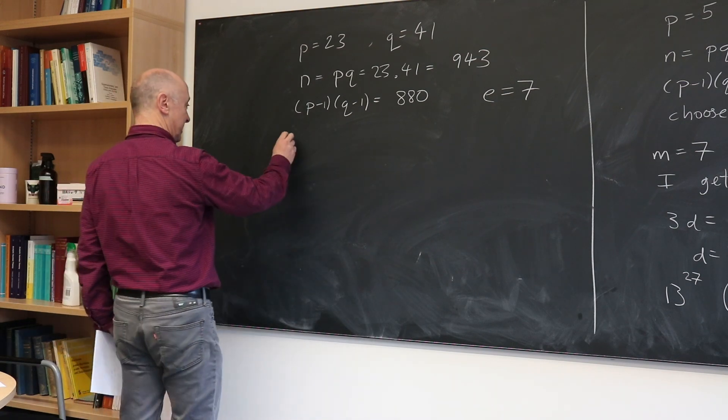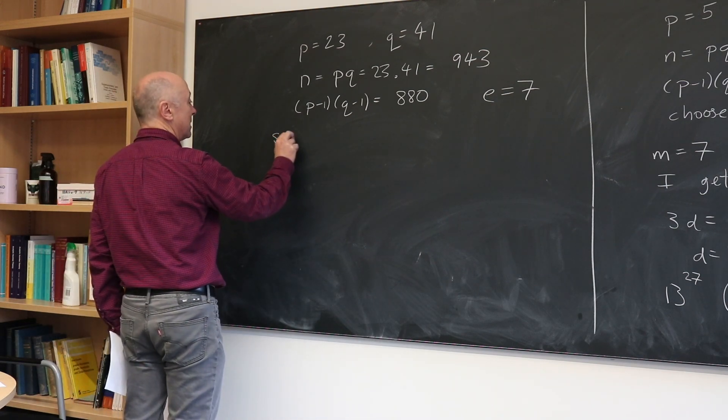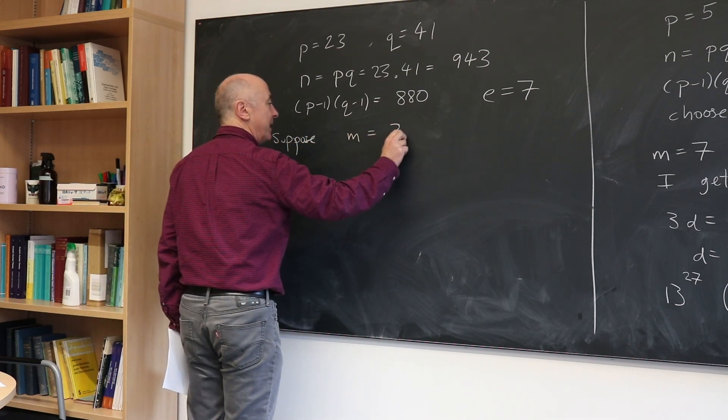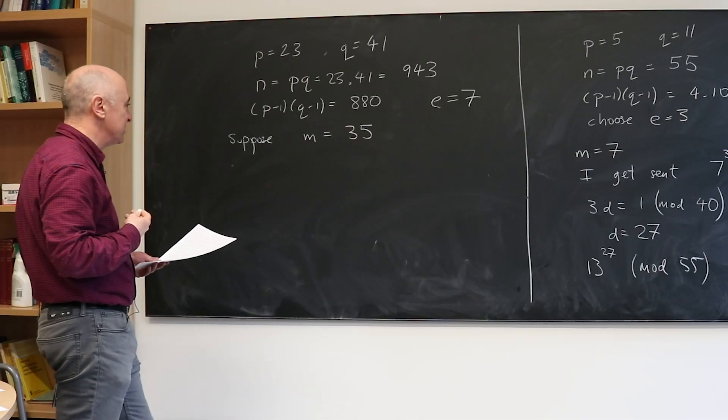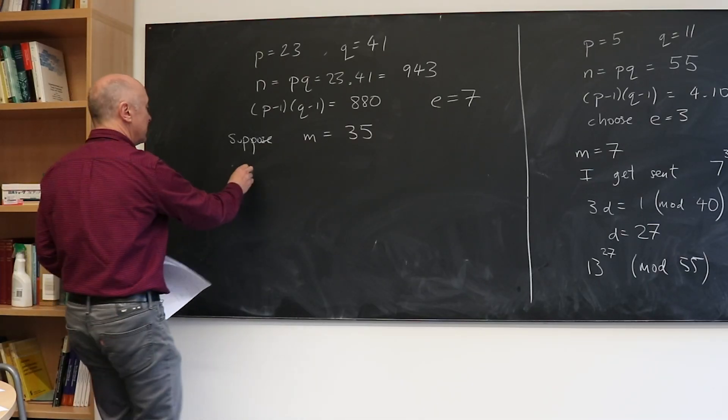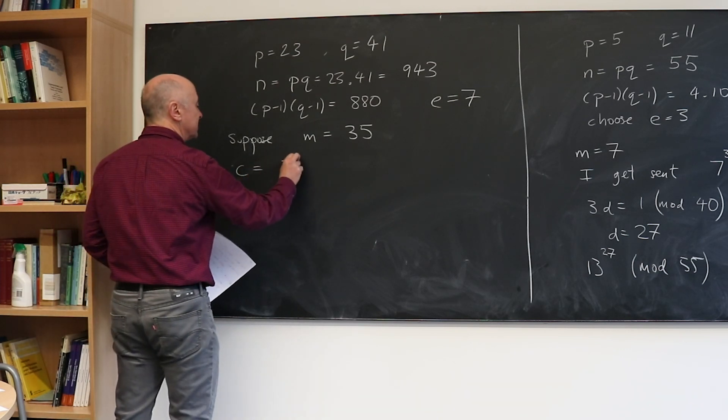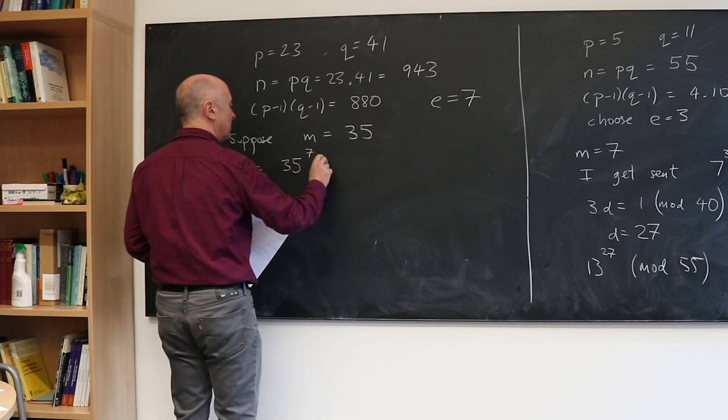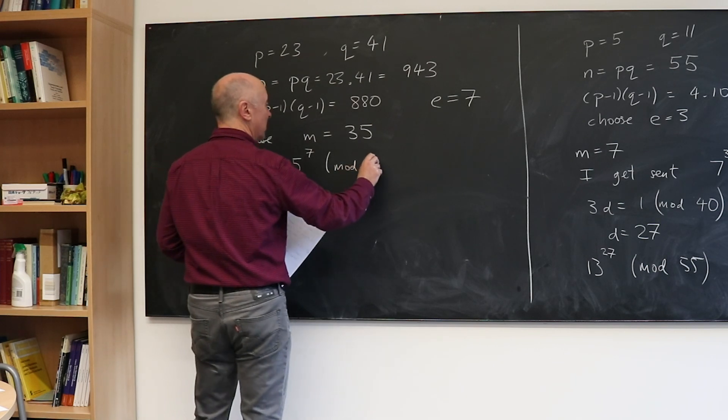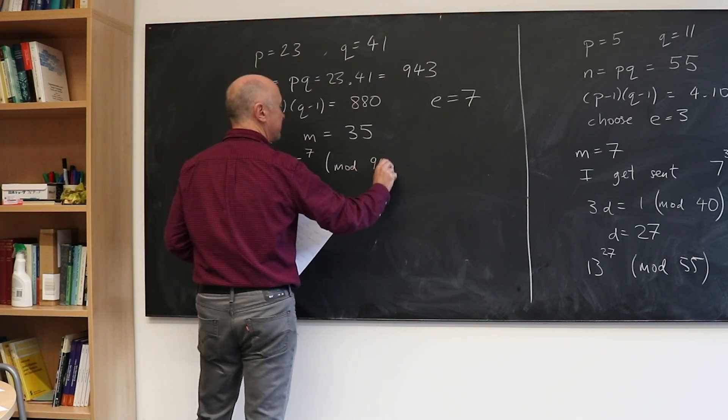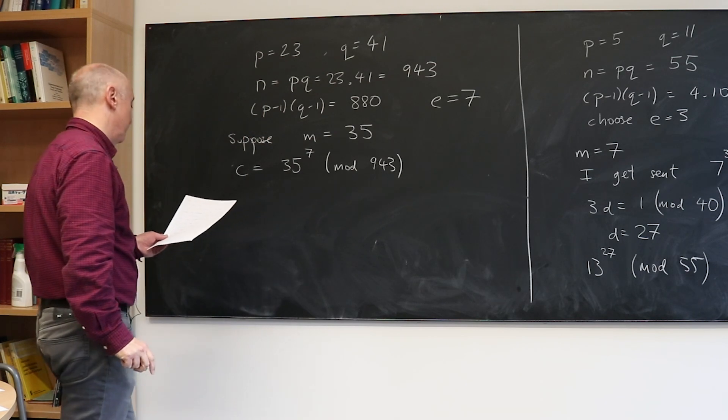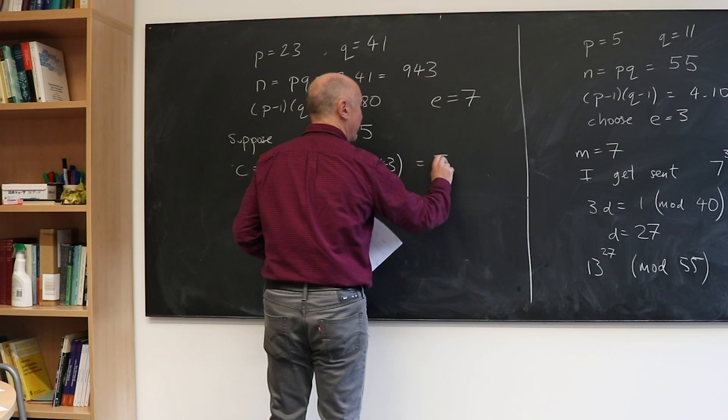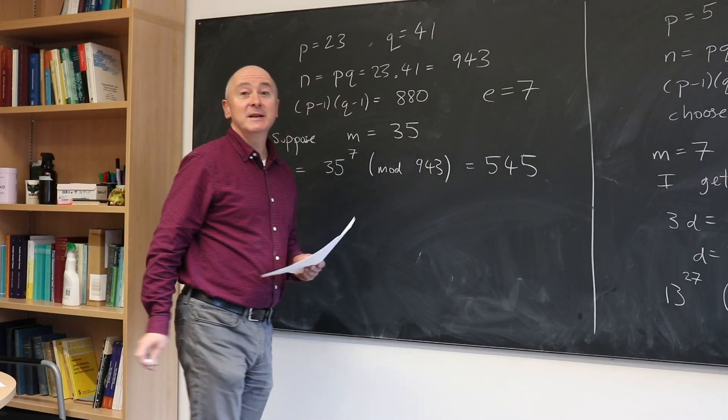So now suppose my message that I want to send is my house number. So the message is the number of my house, 35. So they're sending me 35. What do they send me? They send me the number C which is 35 to the power 7 modulo 943, which according to my calculations is 545. So that's what they send me.